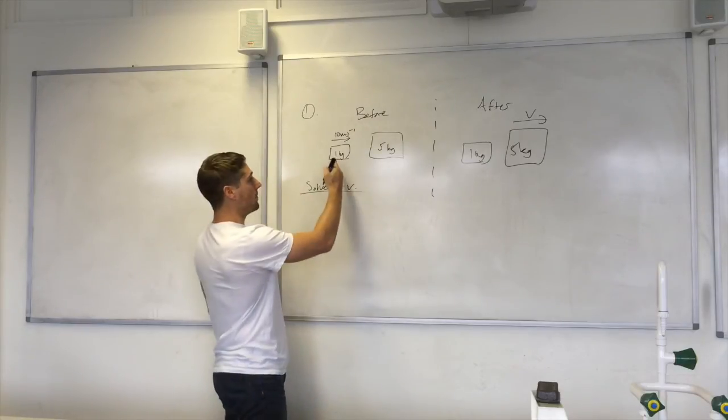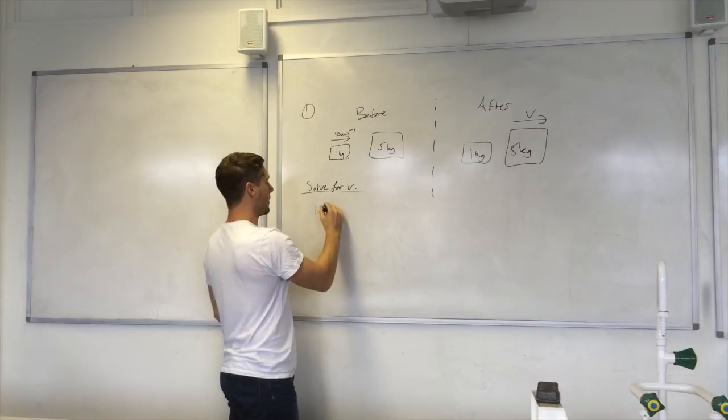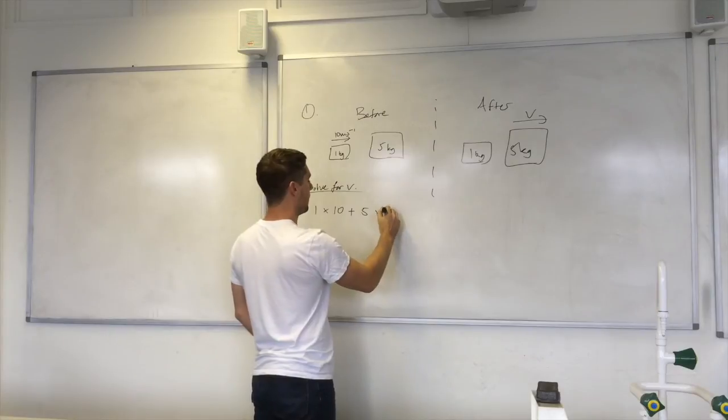Okay, the sum of the momentum before. One times ten. So one kilogram mass times ten. Plus five times zero.